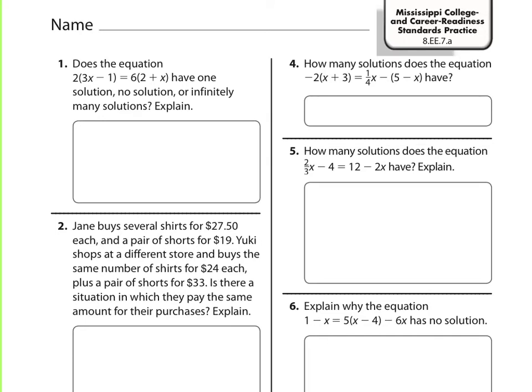This mini lesson is about solving equations. It's standard 8EE7, which is broken apart into EE7A and EE7B. EE7A just asks how many solutions — we're trying to determine the number of solutions to an equation.